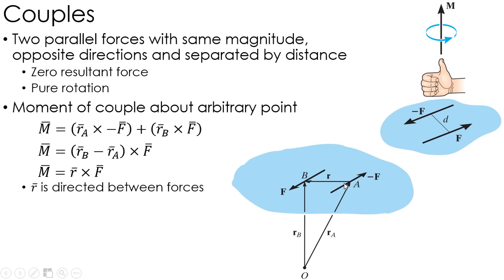So why is that important? Well, what it means is I'm going to get this result regardless of where I take O. If I take O over here, I'm going to have R_A, R_B. But the fact of the matter is R_B minus R_A is still the position vector between the two forces, which is all that I'm interested in, in taking the moment of a couple vector.